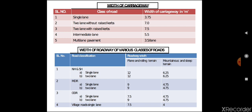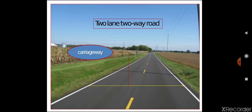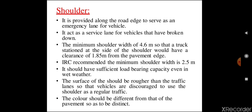Here you can see a two-lane, two-way road. The distance between the markings from one edge to the other is called a carriageway, through which vehicles will move.